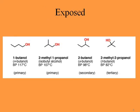This slide compares boiling point temperatures among primary, secondary, and tertiary alcohols. Generally, the more exposed the hydroxyl group, the higher the boiling point temperature. The first two molecules are primary alcohols — 1-butanol and 2-methyl-1-propanol — both more exposed, with boiling points of 117°C and 107°C respectively. The secondary alcohol 2-butanol comes in at 98°C, and the tertiary alcohol tert-butanol is 82°C. So primary alcohols have higher boiling points than secondary, and secondary have higher boiling points than tertiary alcohols.